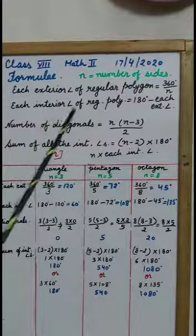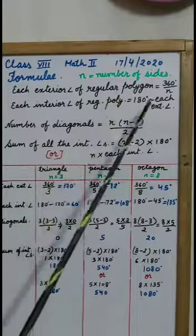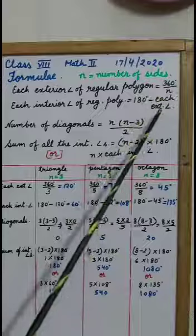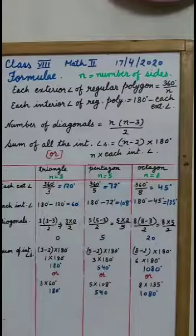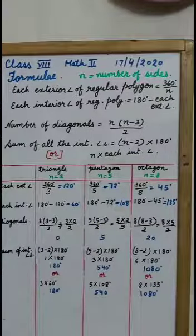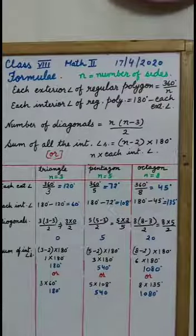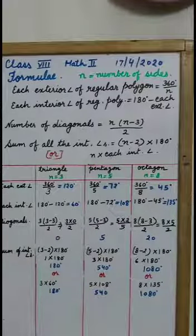Now, each interior angle of a regular polygon is 180 degrees minus each exterior angle. Because yesterday we have studied that interior angle and its exterior angle make linear pair.